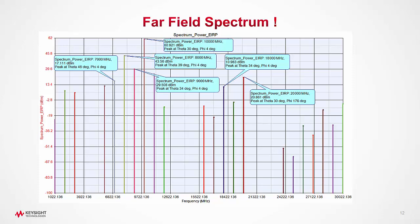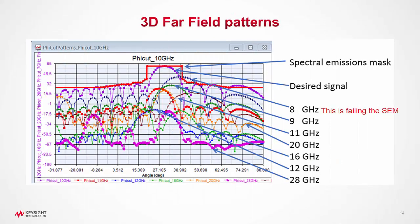That brings us to graph number three, where we plot the phi cut superimposed with the spurious emissions mask as shown here. We can easily see that the main signal is fairly passing the spectral emissions mask.